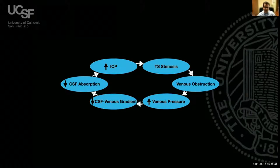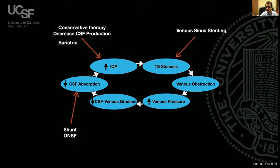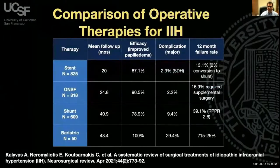There are several different treatments. Conservative therapy—diamox and weight loss—is the mainstay, probably working to decrease CSF production. Shunting is the older surgical therapy of choice that immediately causes CSF absorption. Venous sinus stenting is the newer treatment, targeting transverse sinus stenosis, relieving venous obstruction, and bringing venous pressure to normal, allowing the body to immediately reabsorb fluid. A recently published meta-analysis looked at different surgical therapies to treat IIH.